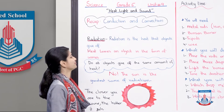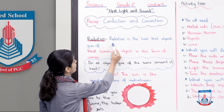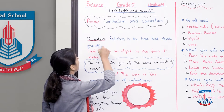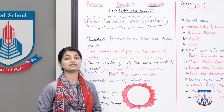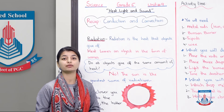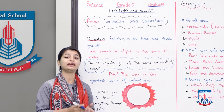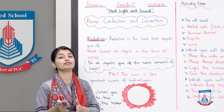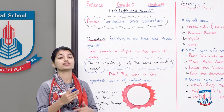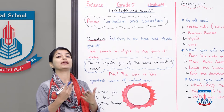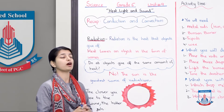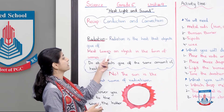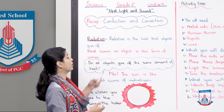Let's read it. Radiation is the heat that objects give off. Very simple — radiation is the heat that comes out from an object; the object sends radiation outward. It can come from any object. Heat leaves an object in the form of waves.